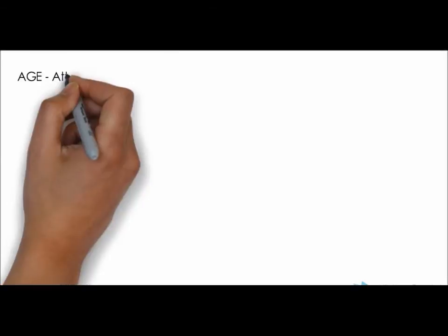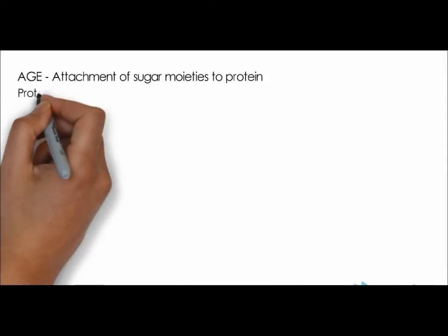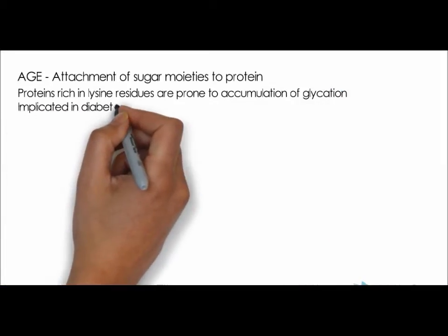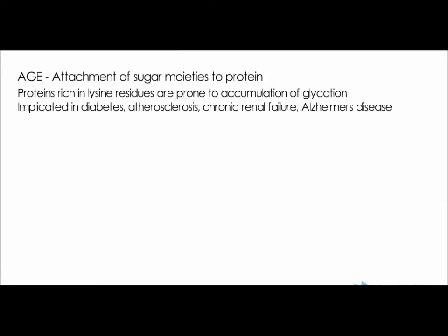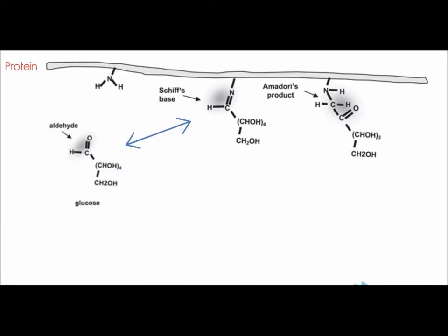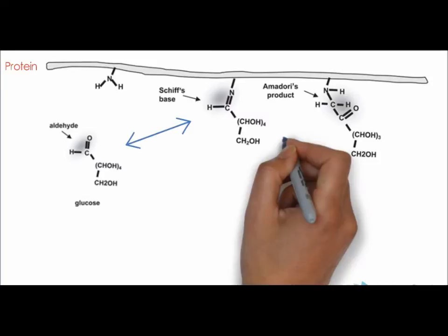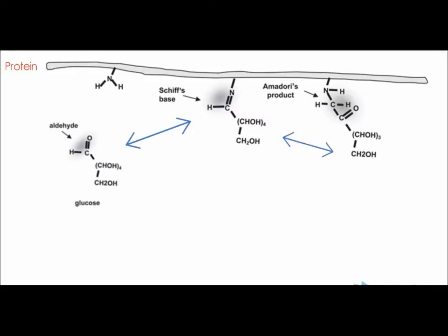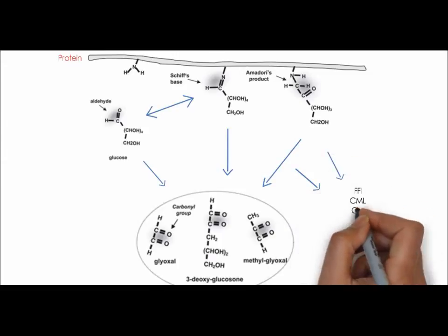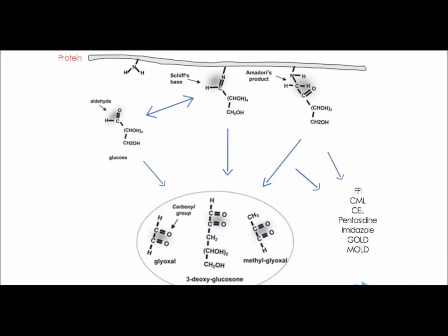Lastly, we come to the advanced glycated end products, AGEs, which is the non-enzymatic attachment of sugar moieties to protein. Proteins rich in lysine residues are prone to accumulation of glycation. They are implicated in diabetes, atherosclerosis, chronic renal failure, and Alzheimer's disease. First, a protein with a free amino group interacts with the highly reactive aldehyde group of glucose, creating a Schiff base. It then spontaneously rearranges itself into an Amadori product, whereby the hydrogen atom from the hydroxyl group adjacent to the carbon-nitrogen double bond moves to bond to the nitrogen, leaving a ketone. A variety of highly reactive carbonyl intermediates can also be formed by glucose, Schiff base, or Amadori product auto-oxidation, which can react again with free amino groups to form AGE products. These AGE products have been found to be highly deleterious to the integrity and function of blood vessel walls.